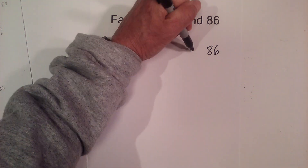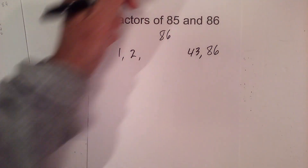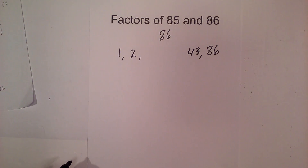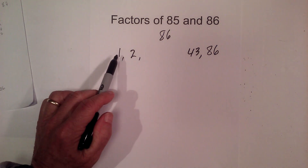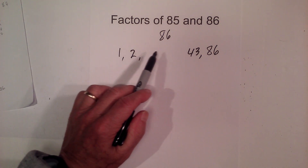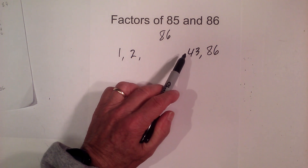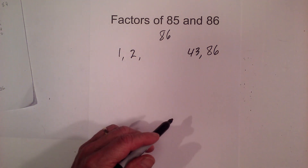2 times 43, and then after that there's no other numbers. So the factors are 1, 2, 43, and 86.